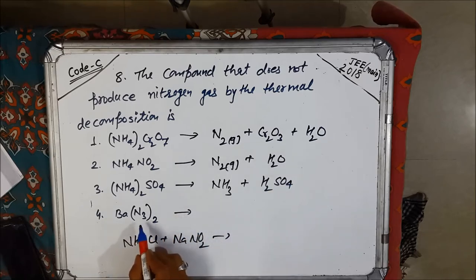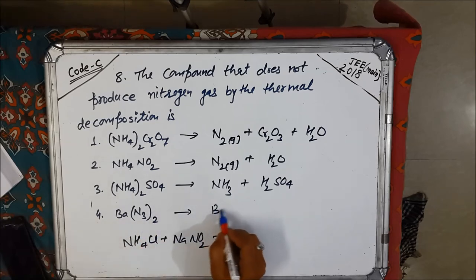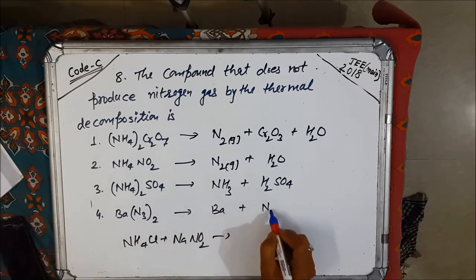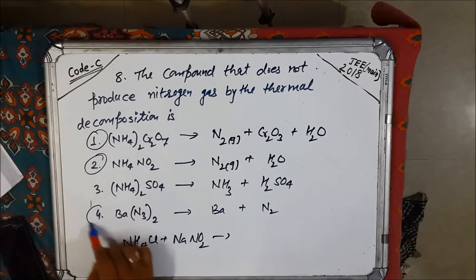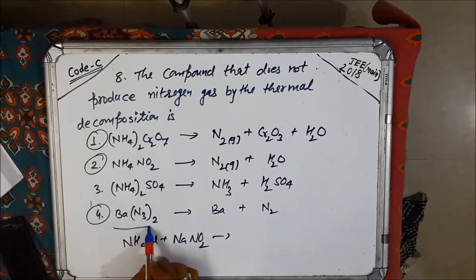Barium azide. This is the best, in this case pure nitrogen is formed. We get barium as a solid and nitrogen gas. So in these 3 cases, even sodium azide gives nitrogen. Pure nitrogen is formed by azide.